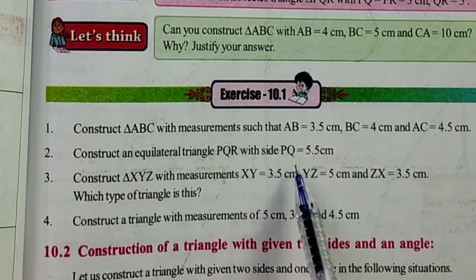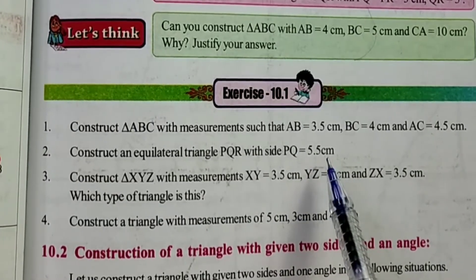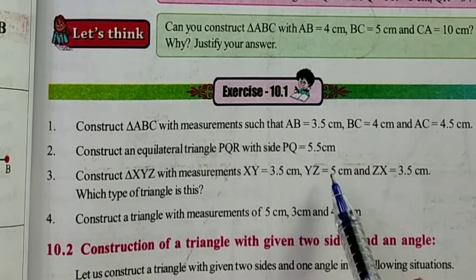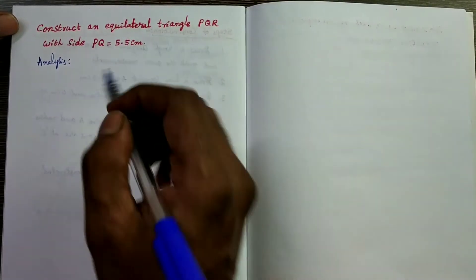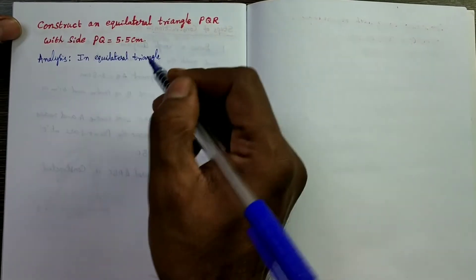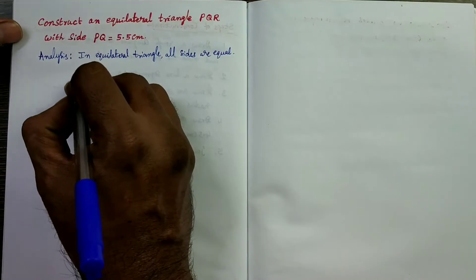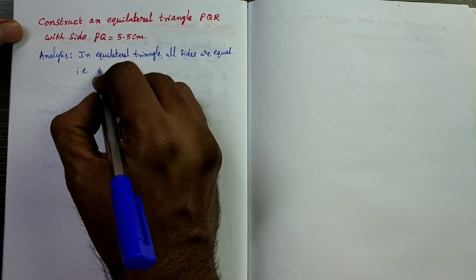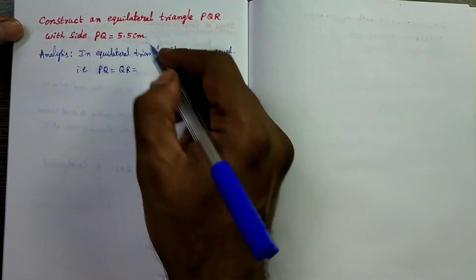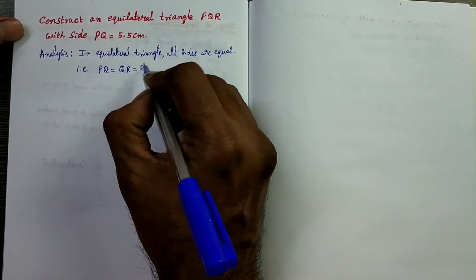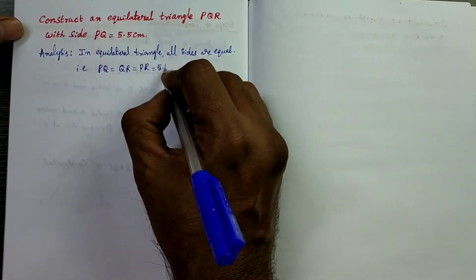Actually we need three measurements, but here only one side is given. How can we construct the given triangle? Let us go to analysis. This is an equilateral triangle, so in an equilateral triangle all sides are equal. That means PQ equals QR equals PR, and all equal the given side, 5.5 centimeters.